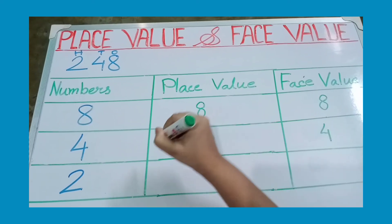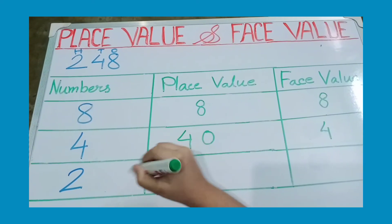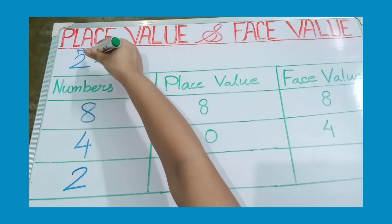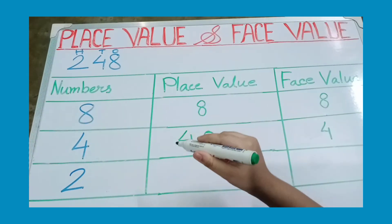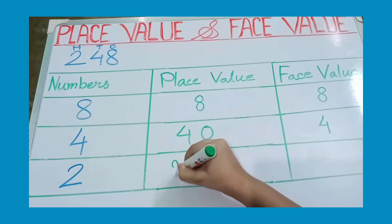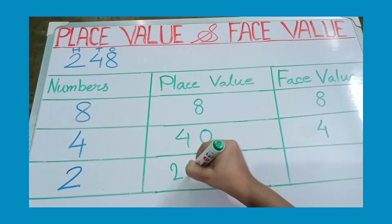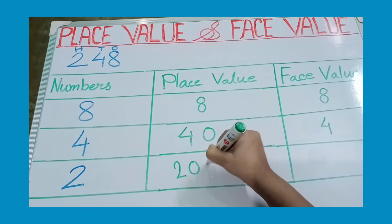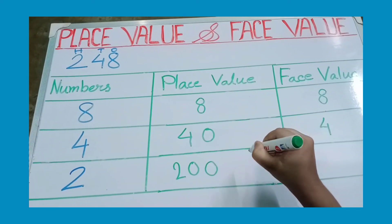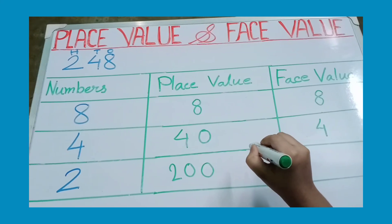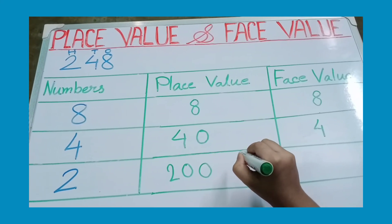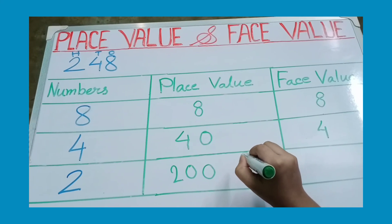And what about 2? As 2 is in the 100's place, the place value is 200. And the face value of 2 is the number itself — that means 2.